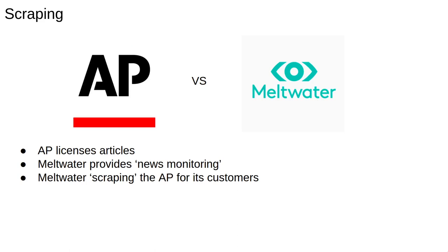To look at one example, let's take the case of Associated Press versus Meltwater. The Associated Press is a news organization whose journalists publish articles and photographs, and which licenses those articles and photographs for a fee. Meltwater is a company offering news and social media monitoring services. At some point, Meltwater was providing AP articles to their customers. The Associated Press sued Meltwater for copyright infringement, with Meltwater claiming it was acting like a search engine and had implied license. A US court found in favour of the Associated Press, deciding that Meltwater had failed to satisfy the criteria for fair use of AP's copyrighted material.